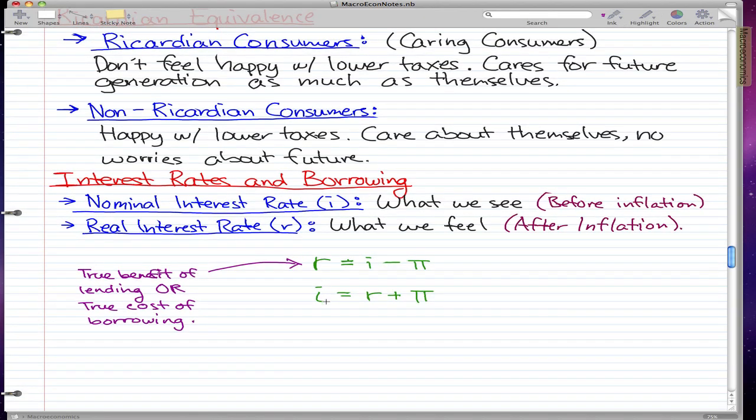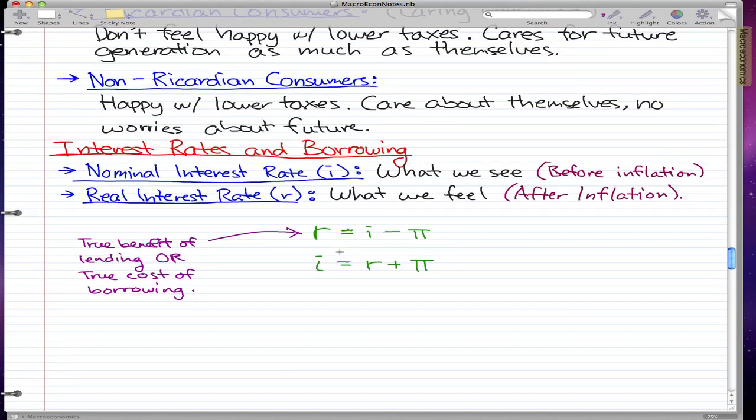Here are the two formulas for real interest rate R and nominal interest rate I. R is the true benefit of lending or the true cost of borrowing because it is adjusted for inflation.